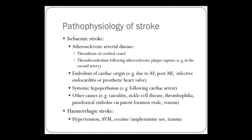Hemorrhagic stroke risk factors are hypertension. AVM — arteriovenous malformation — is where you get communication between the arteries and the veins within the brain, which is susceptible to bleeding. And then substance misuse like cocaine and amphetamines, and obviously trauma.